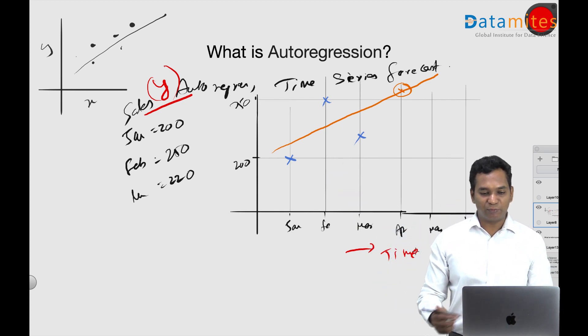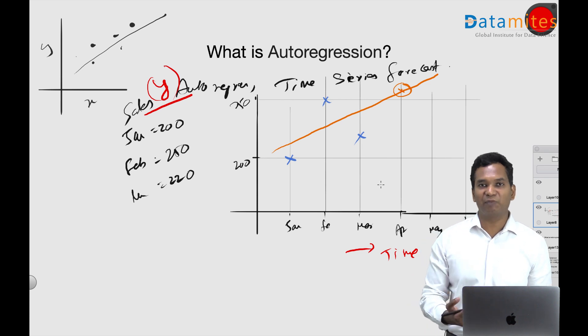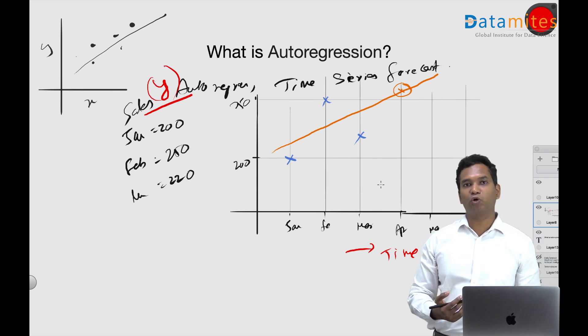And what I'm doing is I'm using y and predicting y with respect to y itself. So I'm using y with y. I'm regressing y with y, and that's why it's called as autoregression.